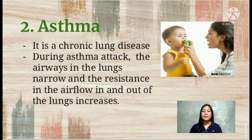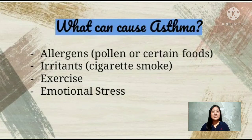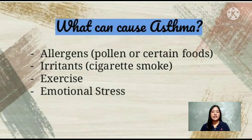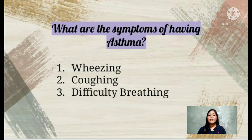Now let's move to asthma. Asthma is a chronic lung disease. During an asthma attack, the airways in the lungs narrow and resistance to airflow in and out of the lungs increases. This lung disease can be caused by allergens such as pollen or certain foods, irritants such as cigarette smoke, exercise, and emotional stress. The symptoms of asthma are wheezing, coughing, and difficulty breathing.